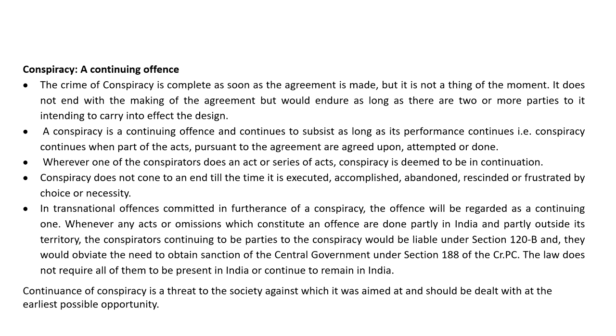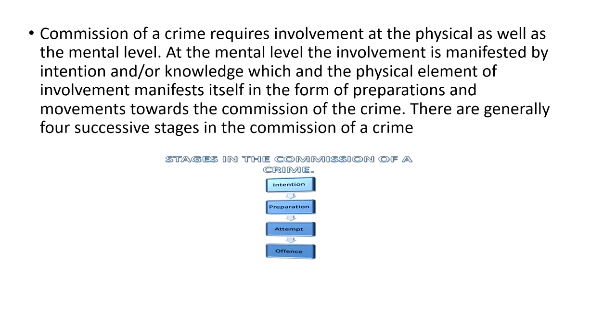Continuance of conspiracy is a threat to the society against which it was aimed and should be dealt with at the earliest possible opportunity. After talking about criminal conspiracy, let us talk about the crime of attempt. An attempt to commit a crime is also a crime in itself. Why do we call it an attempt? Because it was not successful. An accused with intention and preparation does any act towards the commission of the crime — if he succeeds, the act translates into a crime; but where he does not succeed, it remains an attempt.